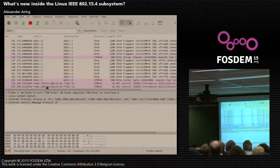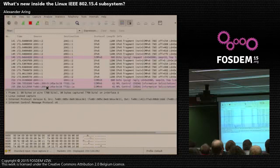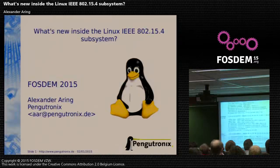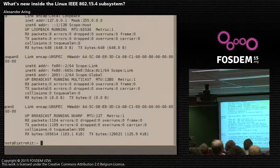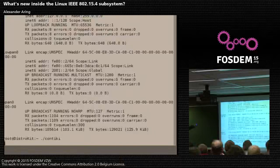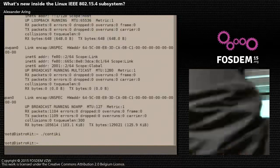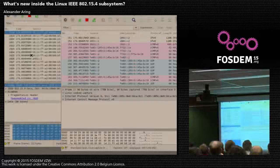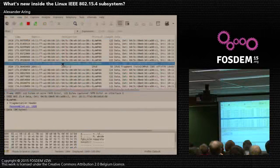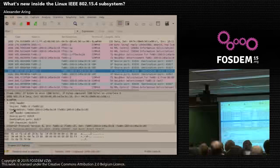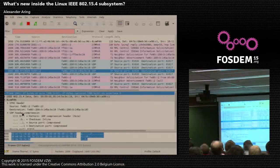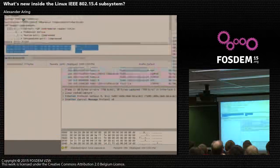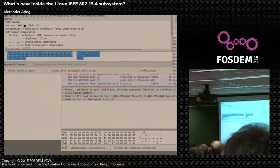At first we have IEEE 802.15.4 6LoWPAN fragmentation, and then we have IPv6 fragmentation, but that's only because it was such a high load ping. Another example: I have here a Contiki node. I want to show a UDP example — the LED is blinking now. When we look at Wireshark again, we see on the raw wpan interface the raw 6LoWPAN view. And we can see here the UDP header compression — I will show you more about it later. We see I used a special port range to save 2 or 4 bytes.